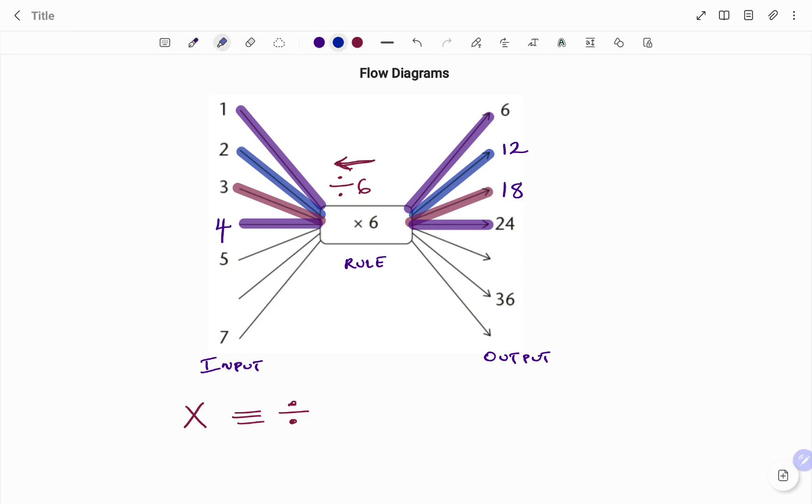The next one, we have a 5 going in as input. The rule says multiply by 6, so we have 5 times 6, which will give you the output of 30 as shown.